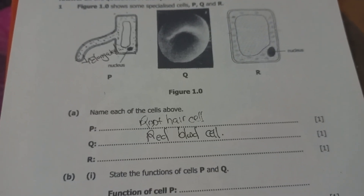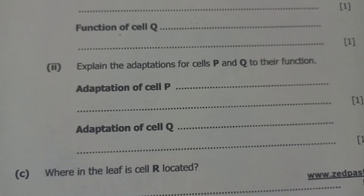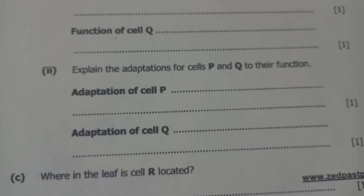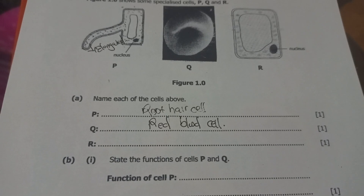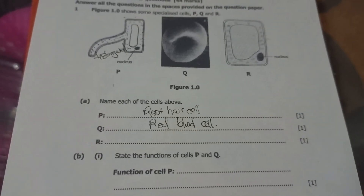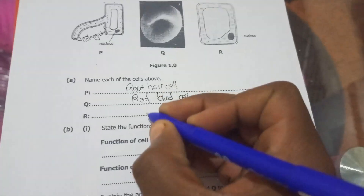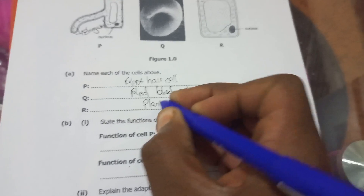Then we have R. We're going to find that when answering this one, the question asks where in the leaf it is located. So the diagram we have here is that of a plant cell, specifically a palisade cell. So we are going to say: plant cell.